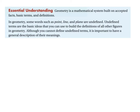The whole basis of geometry is that it's a mathematical system built on accepted facts — things we agree and understand to be true — and also basic terms and their definitions. The facts we will demonstrate to be true, so you don't just have to take it on faith. In geometry, some words such as point, line, and plane are undefined. Undefined terms are basic ideas you can use to build the definitions of other figures in geometry. Although you can't define these undefined terms, it's important to have a general description of them.